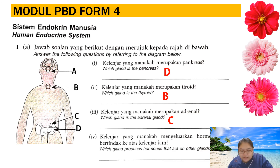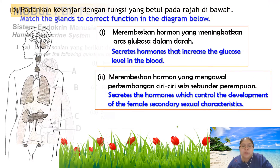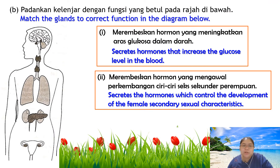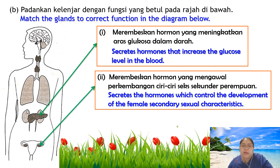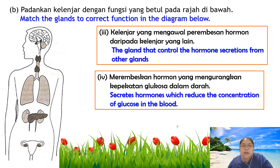The next exercise matches glands to their correct functions. The gland that secretes hormones to increase blood glucose level is the pancreas. The gland that controls female secondary sexual development is the ovary. The gland that controls hormone secretion from other glands — the master gland — is the pituitary. The gland that secretes hormones to reduce blood glucose concentration is also the pancreas.